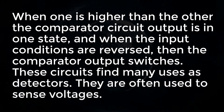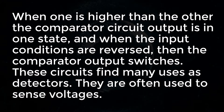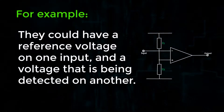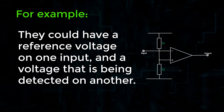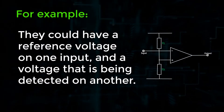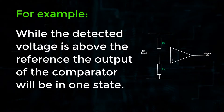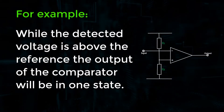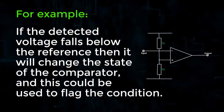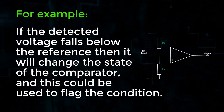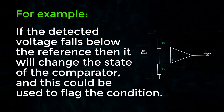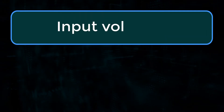These circuits find many uses as detectors. They are often used to sense voltages. For example, they could have a reference voltage on one input and a voltage being detected on another. While the detected voltage is above the reference, the output of the comparator will be in one state. If the detected voltage falls below the reference, it will change the state of the comparator, and this could be used to flag the condition.